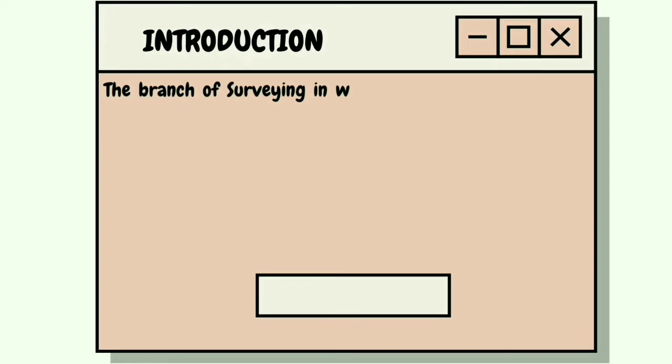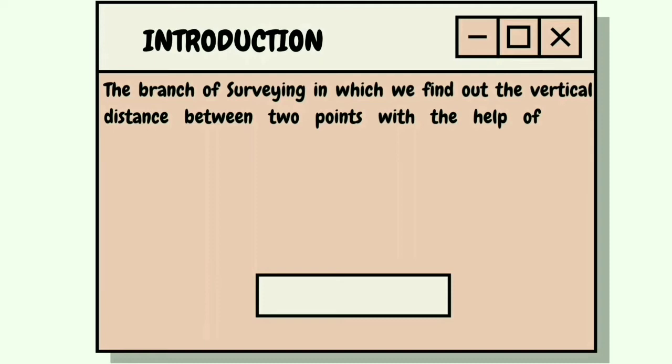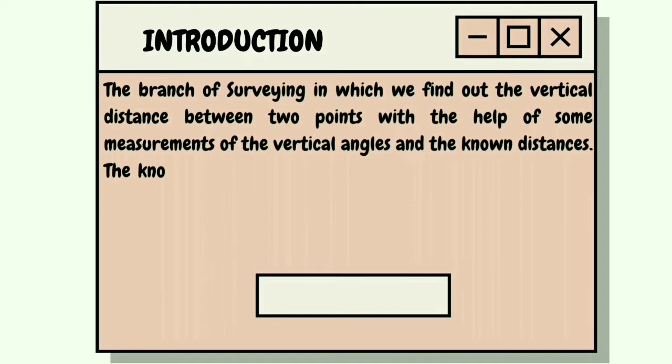Introduction. The branch of surveying in which we find out the vertical distance between two points with the help of some measurements of the vertical angles and the known distances.